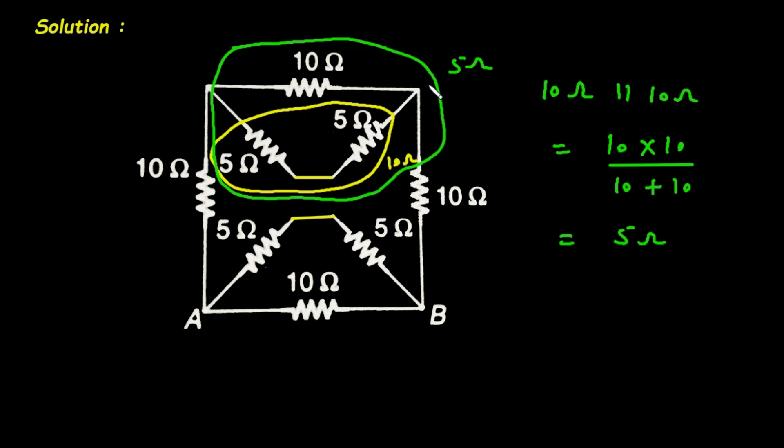Now this 10 ohm, 5 ohm and 10 ohm they are all connected in series. So here also we can apply the same formula and we get finally 5 ohm. So this 5 ohm and this 5 ohm are connected in series.